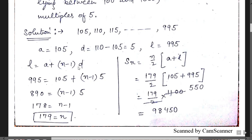In the first step, calculate the value of n using l equals a plus (n minus 1) into d. Substituting: 995 equals 105 plus (n minus 1) times 5. So 890 equals (n minus 1) times 5, giving n equals 179. Then apply the sum formula Sn equals n by 2 into (a plus l): 179 divided by 2, times (105 plus 995) equals 179 divided by 2 times 1100, which equals 179 times 550 equals 98,450.